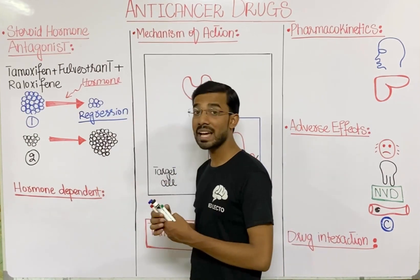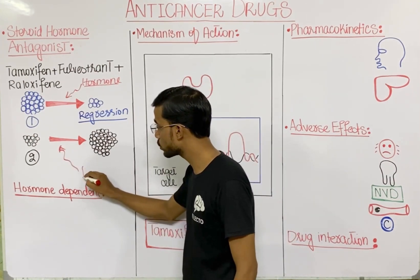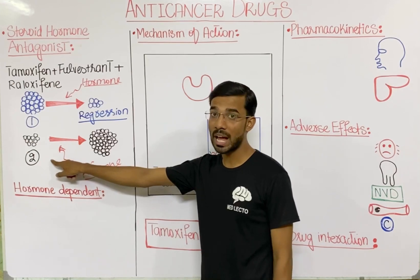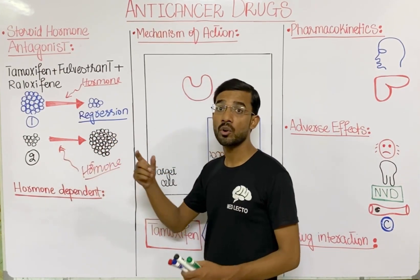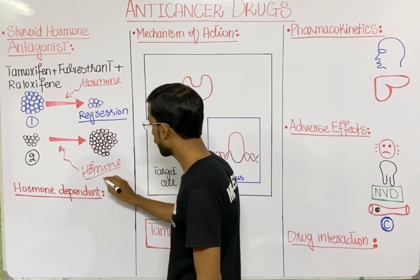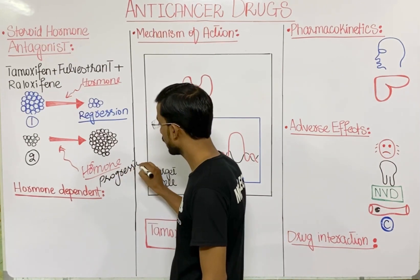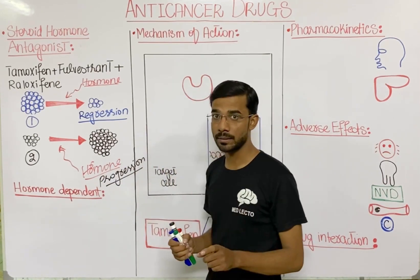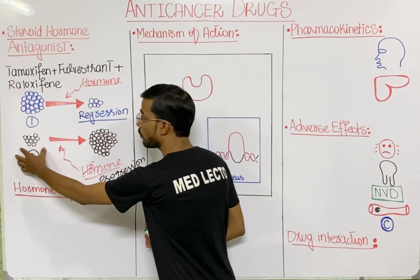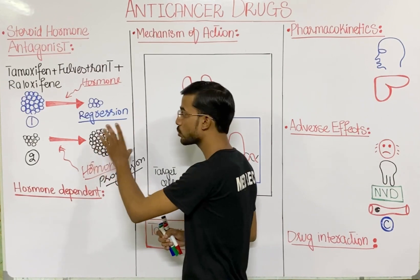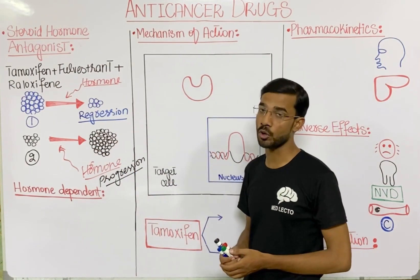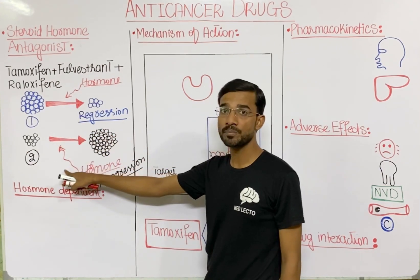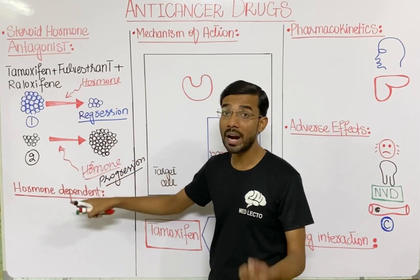For the second tumor, if we give a hormone stimulus to tumor two, then this tumor will go towards progression — its size starts increasing. This is called the hormone-dependent tumor, which requires the hormone for its progression.